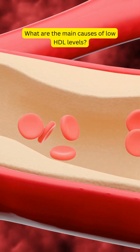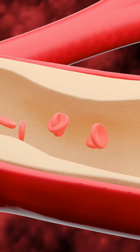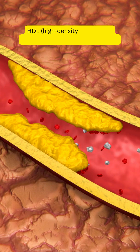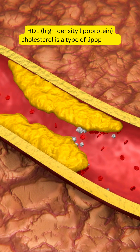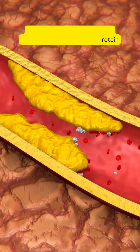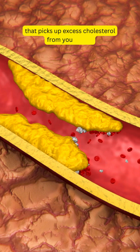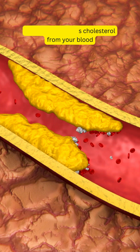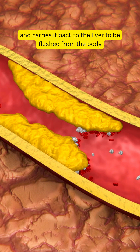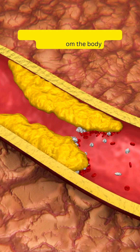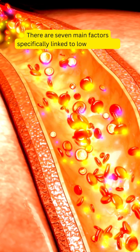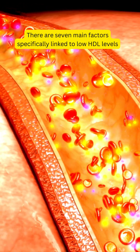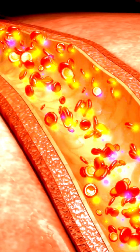What are the main causes of low HDL levels? HDL, high-density lipoprotein, cholesterol is a type of lipoprotein that picks up excess cholesterol from your blood and carries it back to the liver to be flushed from the body. There are seven main factors specifically linked to low HDL levels.